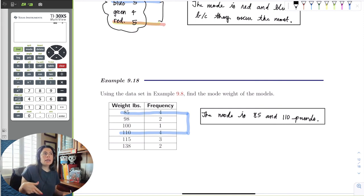But if you had, like in our situation, where you had observations that occurred the most and the same number of times, then you can have more than one mode.